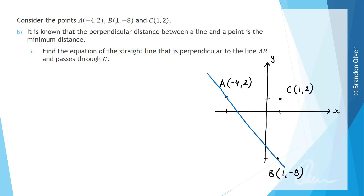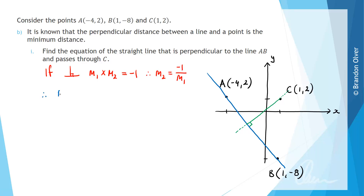For part B, the perpendicular distance between a line and a point is the minimum distance between those two objects. For part 1, we want to find the equation of the straight line perpendicular to line AB and passing through C. If two lines are perpendicular then m1 times m2 equals negative 1, so the second gradient equals negative 1 divided by the first gradient. Since the first gradient was negative 2, the second gradient is negative 1 divided by negative 2, which equals positive one half.